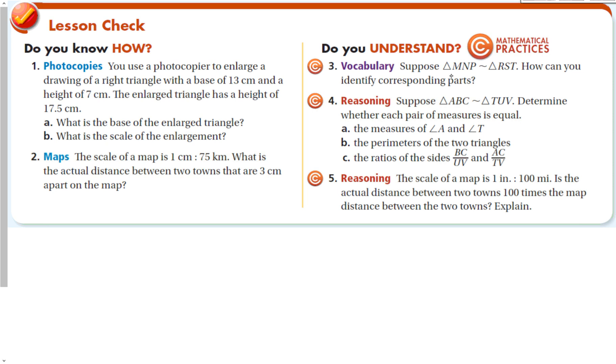Vocabulary. Suppose triangle MNP is similar to triangle RST. How can you identify the corresponding parts? M is similar to R, N to S, P to T. And then draw it out. Any two things that are next to each other are going to be similar to each other. So NP is similar to ST, MN to RS, and MP to RT, or backwards.